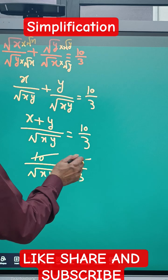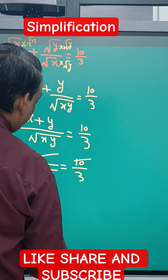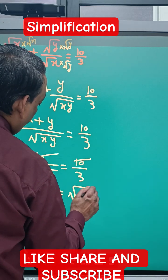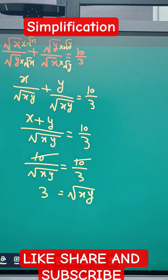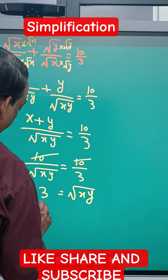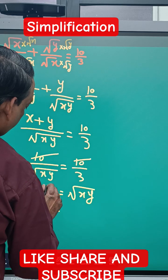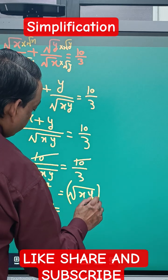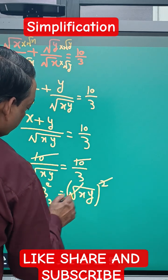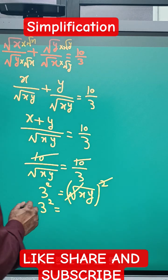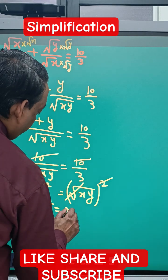We get 1/√xy = 1/3, so √xy = 3. Now we'll square both sides. Squaring cancels the root, giving us 3² = xy.